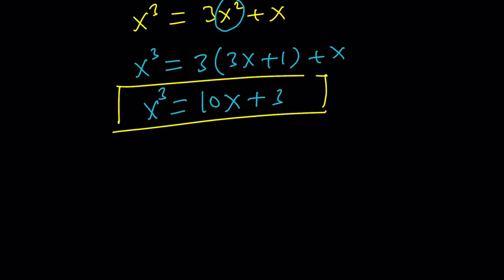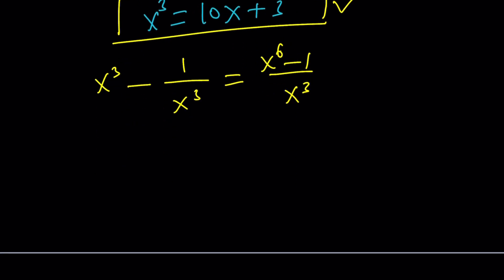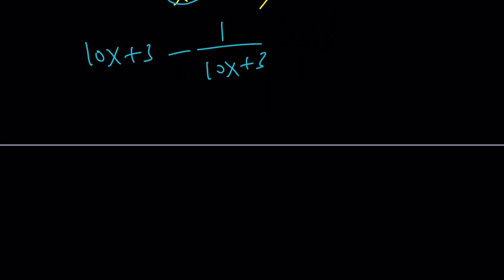So, that's probably going to require that you find x to the 6th. Because if you make a common denominator, that gives you x to the 6th, which means you need to square this. But you don't need to do that. Because we could just replace x cubed with 10x plus 3 right away. So, forget about this. And replace x cubed with 10x plus 3 in both places. And this is actually going to be a lot easier. Distribute. Make a common denominator.